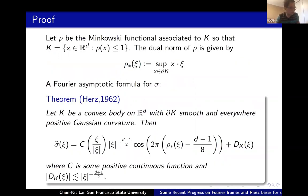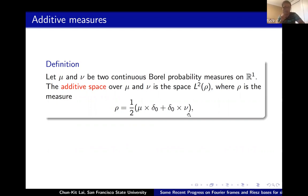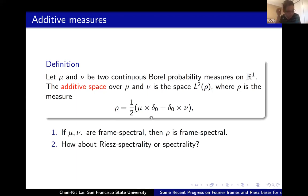Let me mention some recent results on additive-type measures — the class first studied by Nir. You take two continuous probability measures, place one on the x-axis and one on the y-axis, and average them. Nir proved that if μ and ν are both spectral, then their additive combination also admits a Fourier frame — it is frame spectral. I have been concerned with the Riesz spectrality, or orthonormal basis question, for this type of measure. There are some recent results.